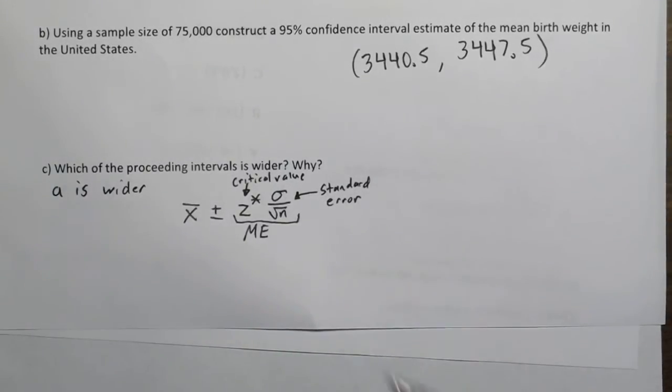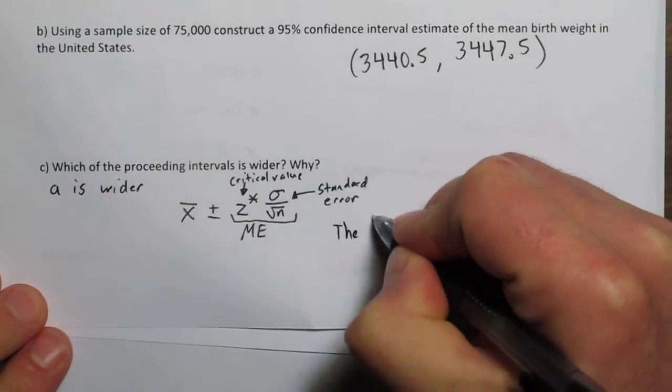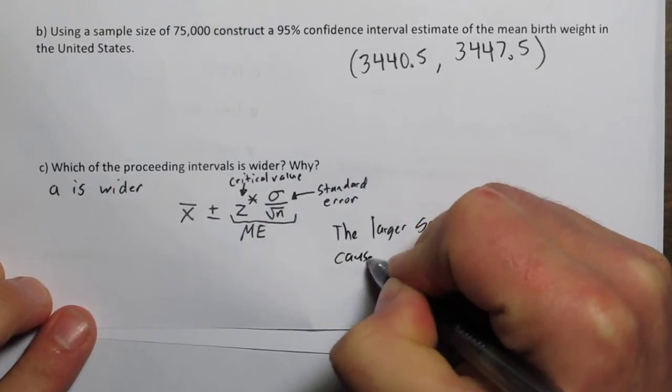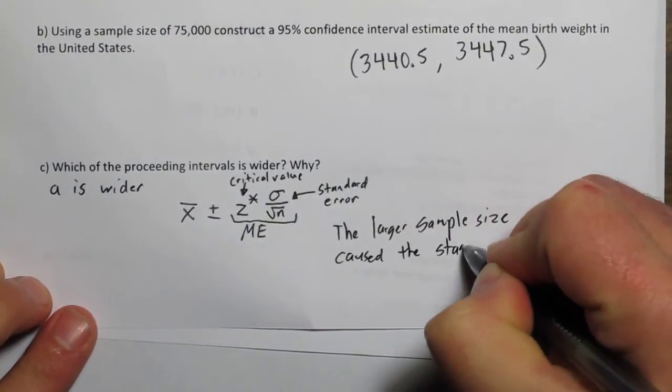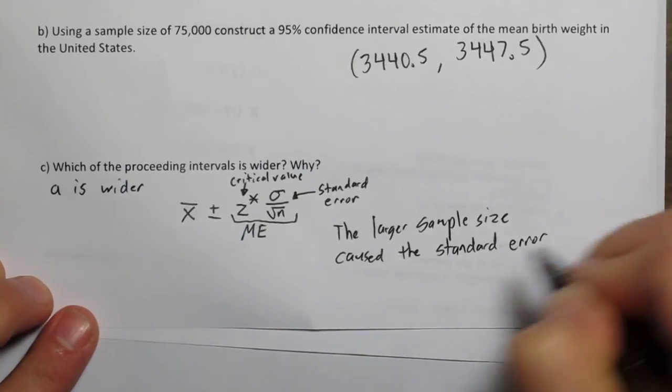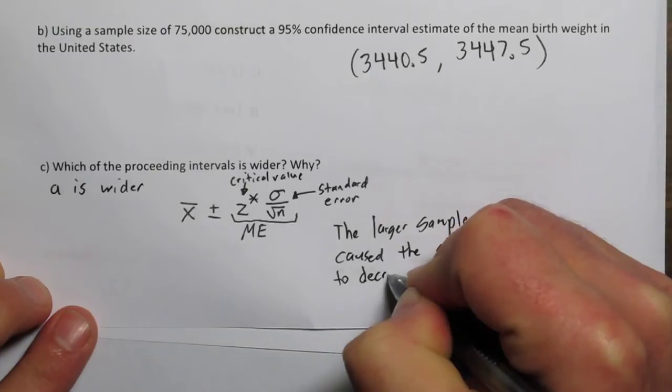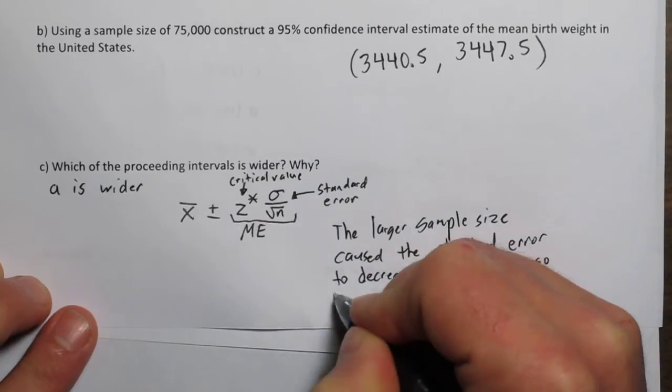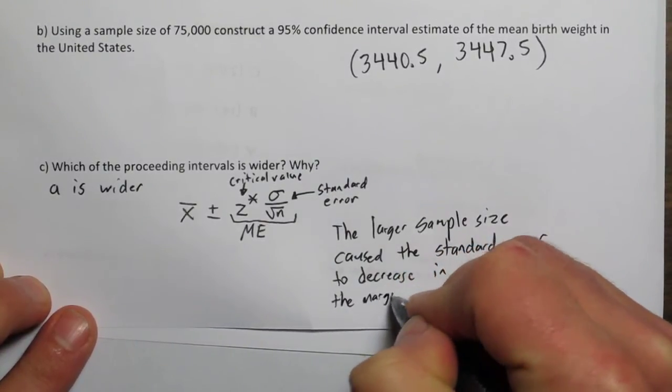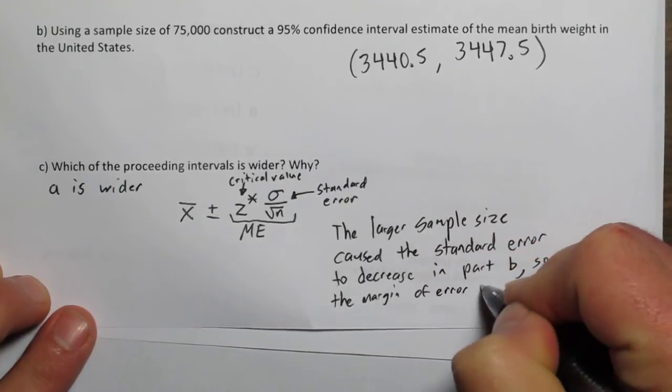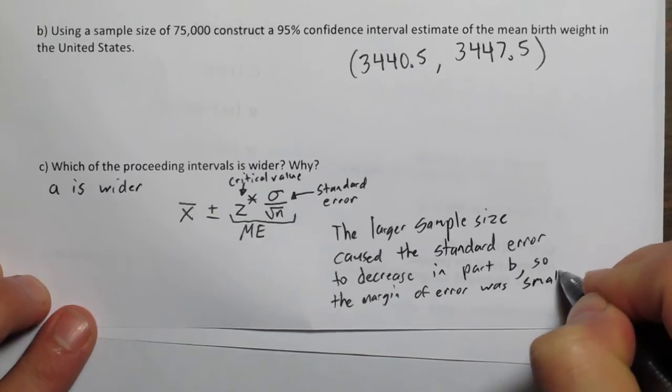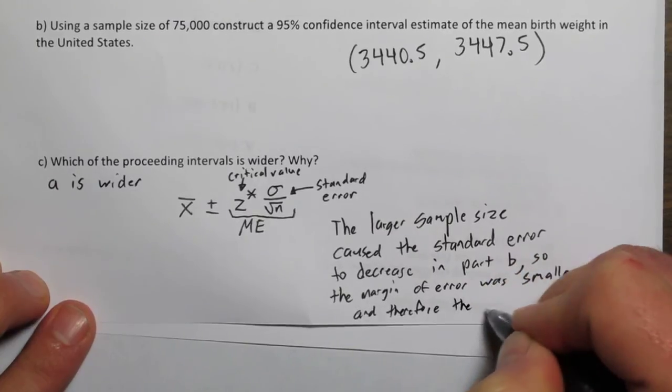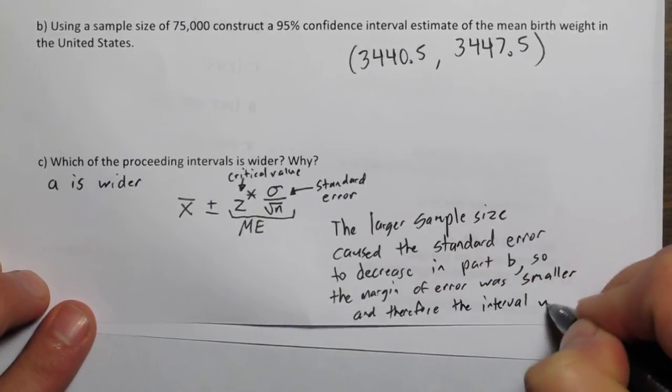So which is larger, A is wider, and why, the larger sample size caused the standard error to decrease in part B. So the margin of error was less, or the margin of error was smaller, and therefore the interval was narrower.